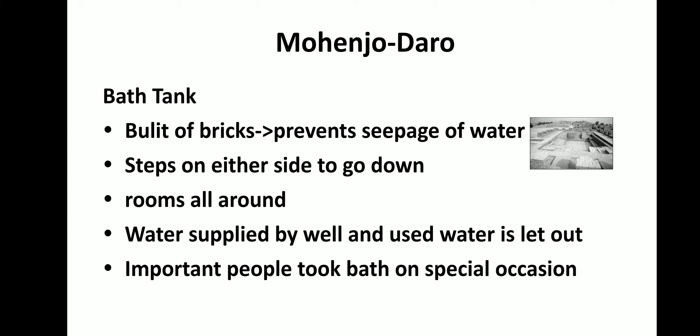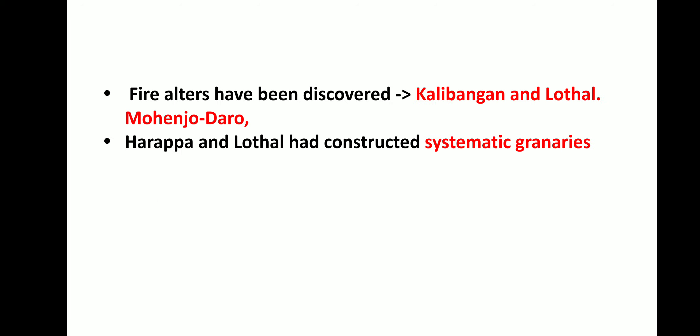Water was supplied by a well, and used water was let out after bathing. Historians think the bath tank may have been used by important people on special occasions. Fire altars were discovered in Kalibangan, which is in Rajasthan, and also in Lothal, which is in Gujarat, and in Mohenjodaro. Harappa and Lothal had constructed systematic drainages.